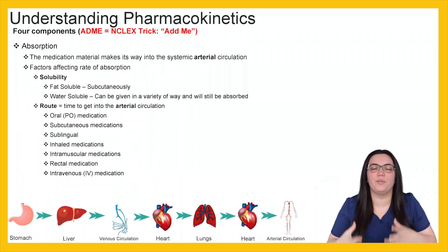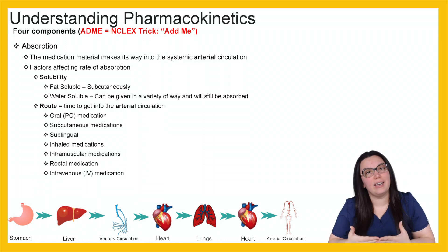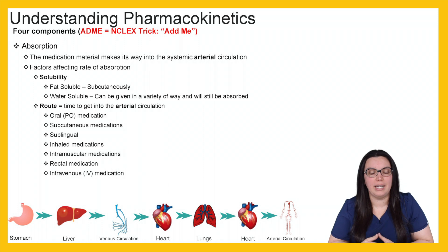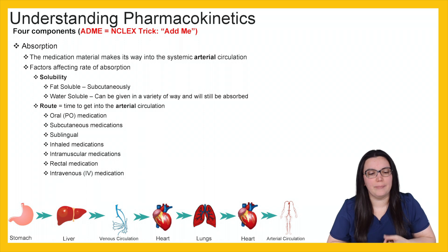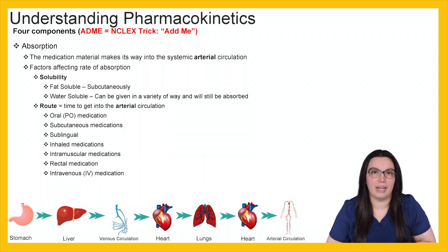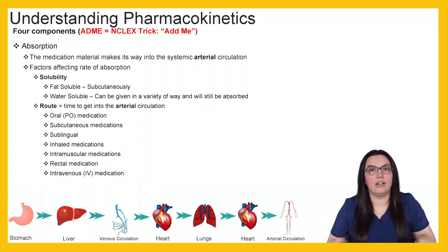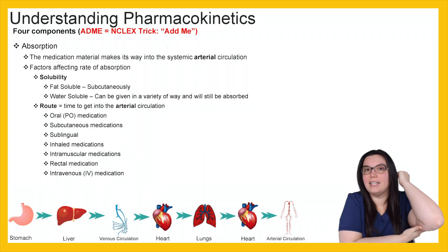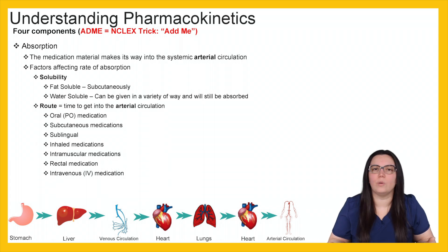We're gonna look at the first part of our four components — that's absorption. When it comes to absorption, the medication material makes its way into our systemic arterial circulation. There are factors that affect the rate of absorption: solubility and route. Fat-soluble medications are injected into our subcutaneous tissues because they need to be near fatty cells and tissues. Water-soluble medications can be given in a variety of ways and will still be absorbed regardless of the route.